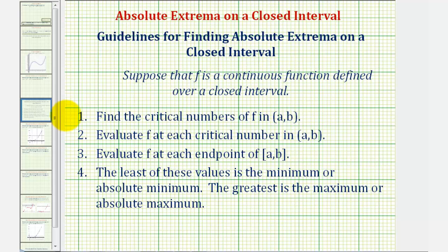To do this, we'll first find the critical numbers of the given function on the open interval. Step two, we'll then evaluate the function at the critical numbers. Step three, we'll evaluate the function at the endpoints of the closed interval. And then finally, the least of these function values is the minimum or absolute minimum, and the greatest of the function values is the maximum or absolute maximum.